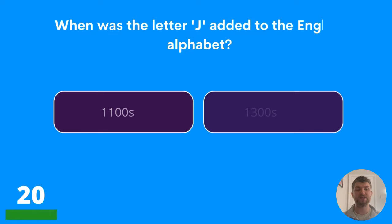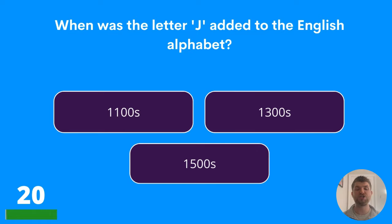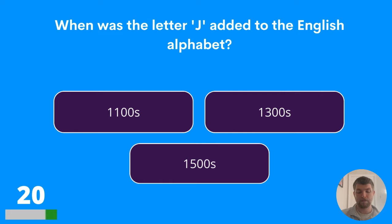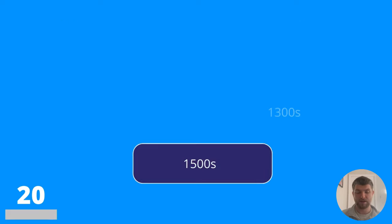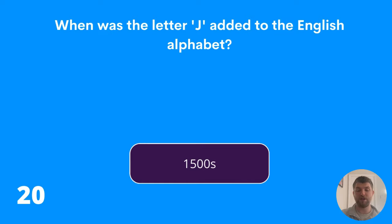Question twenty: when was the letter J added to the English alphabet? The 1100s, the 1300s, or the 1500s? The answer is the 1500s.